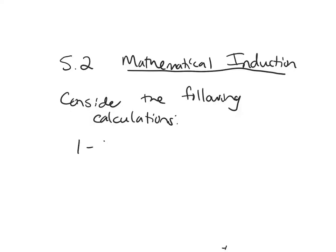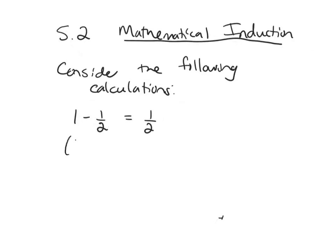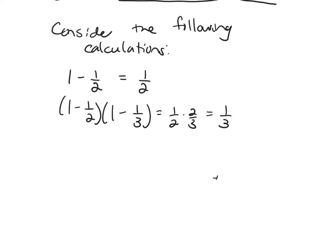So 1 minus 1/2, that'll be 1/2. 1 minus 1/2 times 1 minus 1/3 is 1/2 times 2/3 or 1/3. And then let's do one more of these. 1 minus 1/2, 1 minus 1/3 times 1 minus 1/4. If you compute this, you'd see it's the same thing as 1/4.